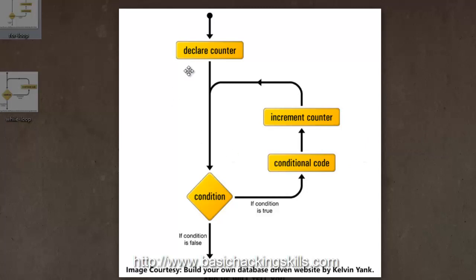Let's start with this image where you can visualize the working of a for loop. The for loop starts with a counter declaration and then checks the condition. If the condition is true, it executes the code inside the block. After that, it goes to the increment counter, and then goes back to the condition again, executing code until the condition becomes false, at which point it exits the loop.